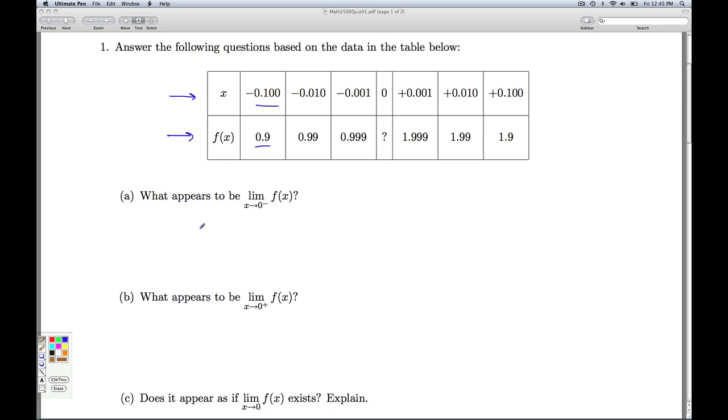Part A, what appears to be the limit as x goes to 0 from the left of f(x). So what does it mean for x to go to 0 from the left? It means I'm plugging in things a little bit smaller than 0. So as I look at these data points here, negative 0.1, negative 0.01, negative 0.001, these are the points that are approaching 0 from the left.